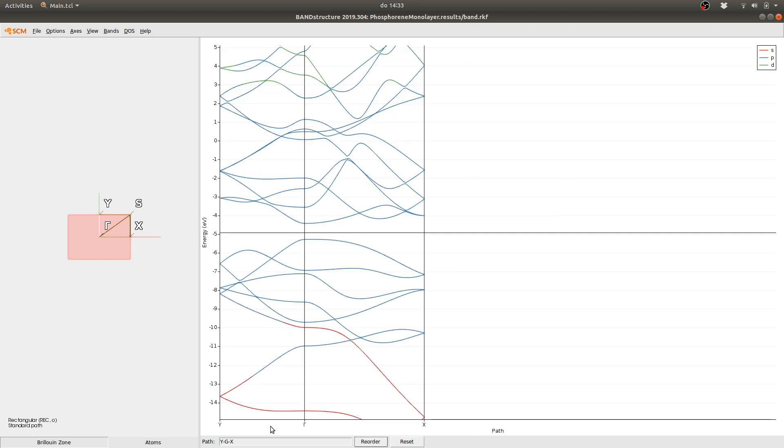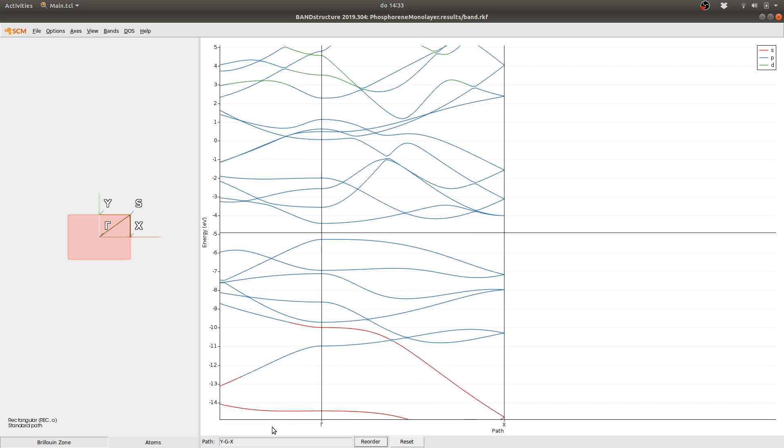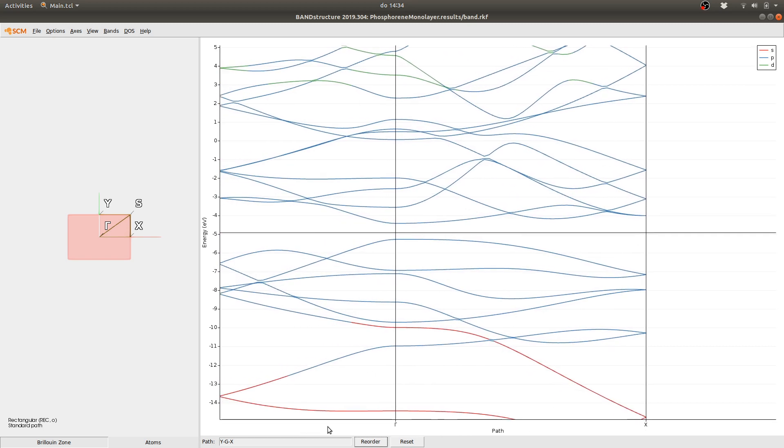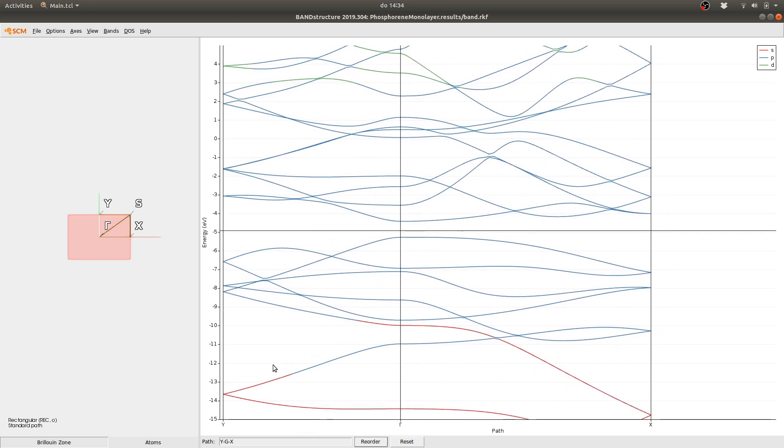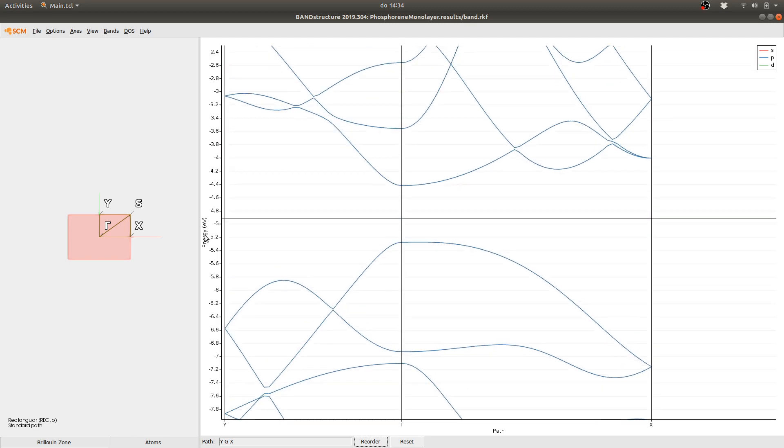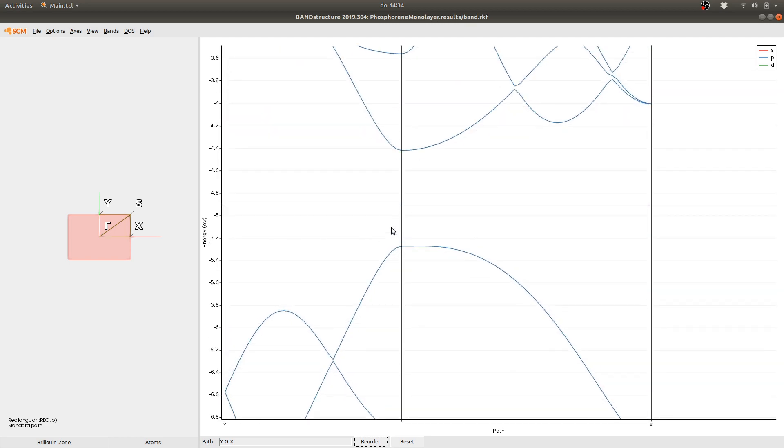You can see here we can also change the zoom level vertically and horizontally in order to look at the valence band here and at the conduction band on top.